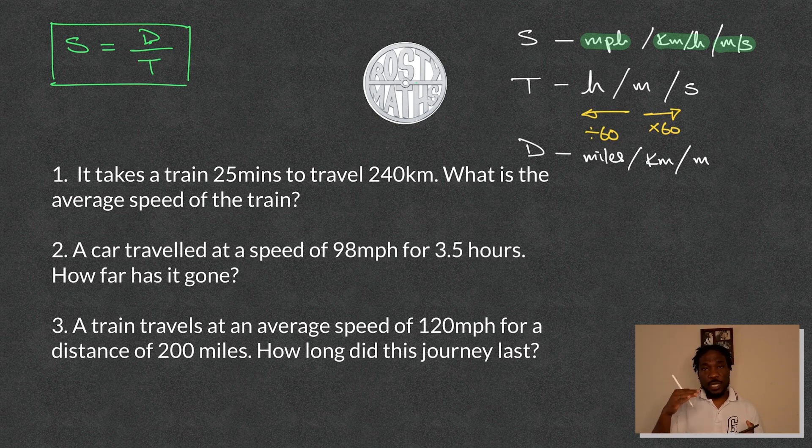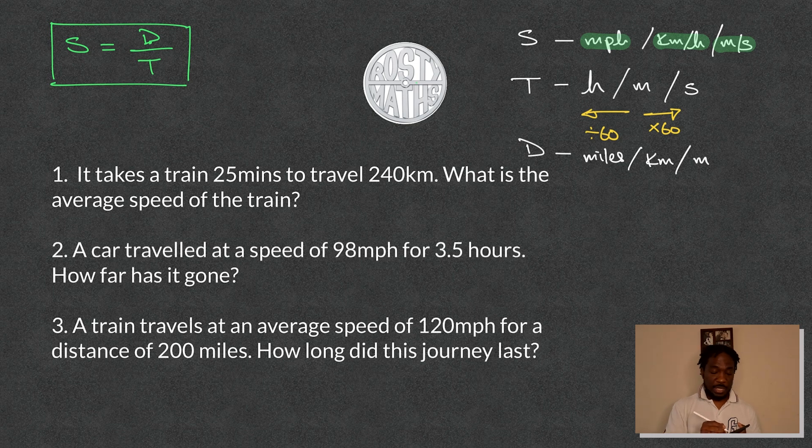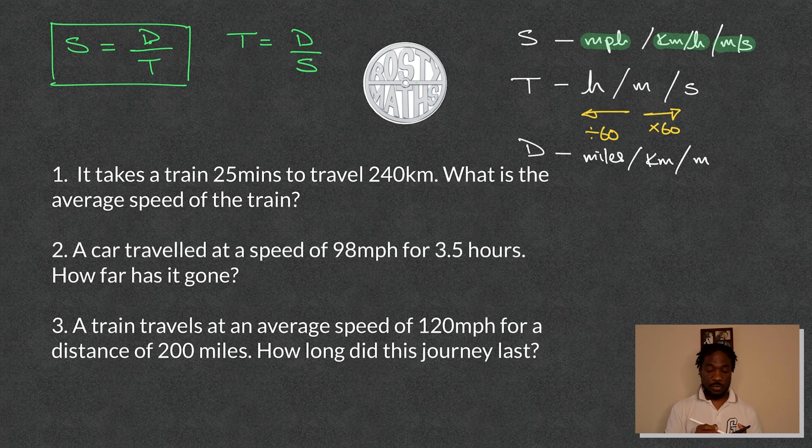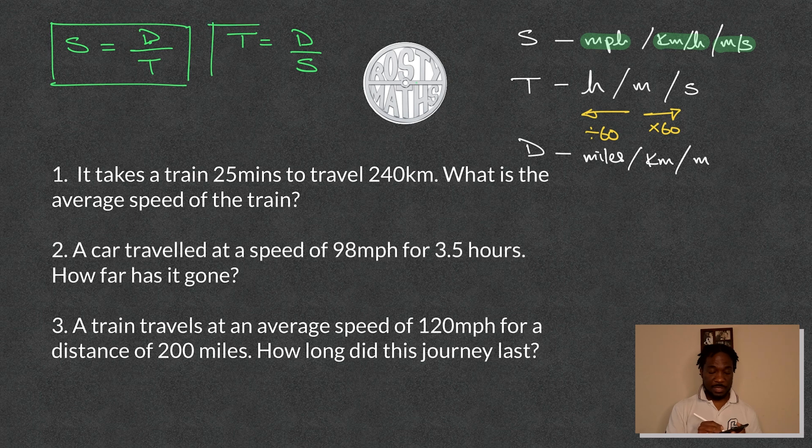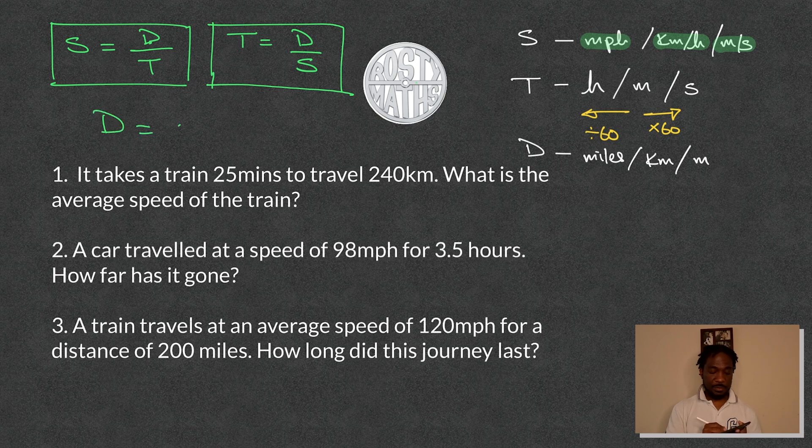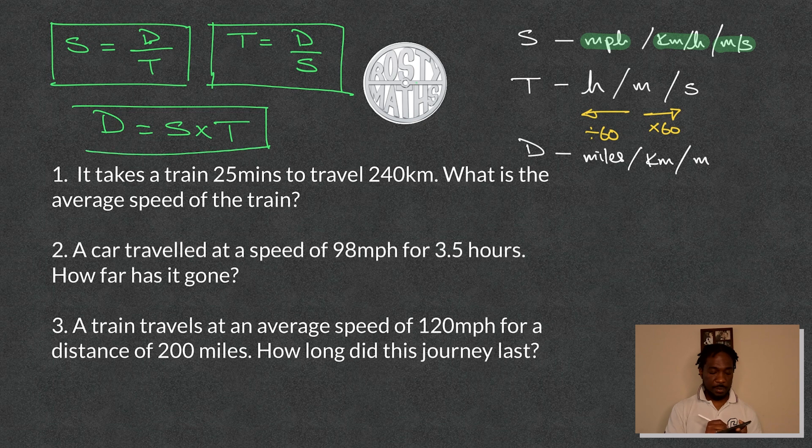So speed is distance over time. We can rearrange that and we can say that time is equal to distance over speed. We can just cross multiply here. So time is distance over speed. I will leave this at the top of the screen because we're going to need it. And finally, distance is equal to speed times time. So really important that we remember all of these.